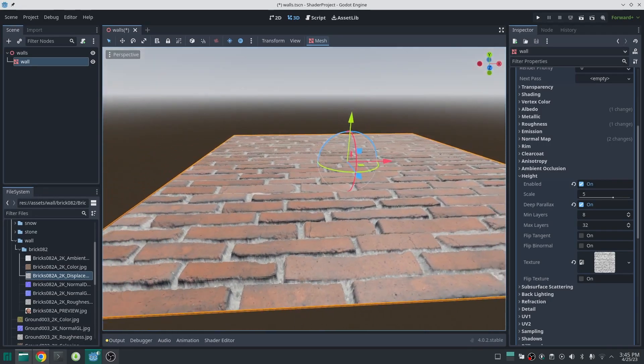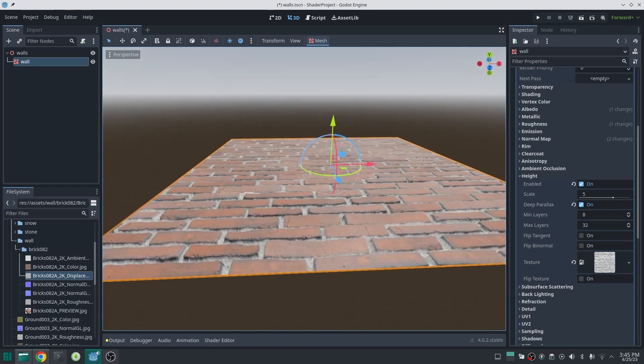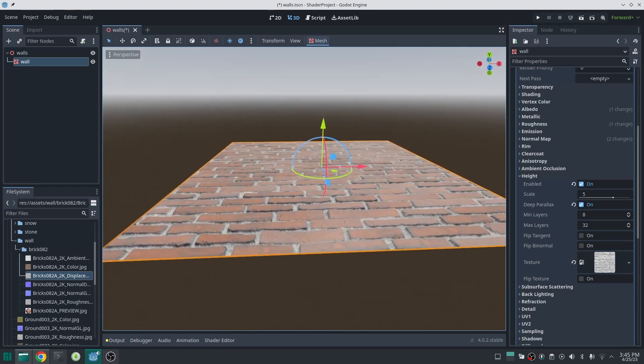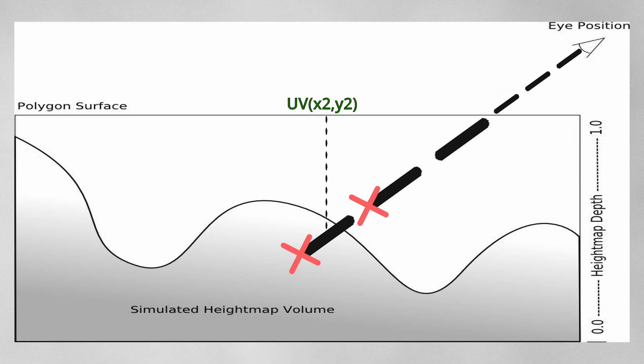So here we have min layer which is 8 and max layer which is 32. So layer is the number of total steps. For better optimization, when we look at the top of our mesh we set the number of steps 8 times which is defined in min layer.